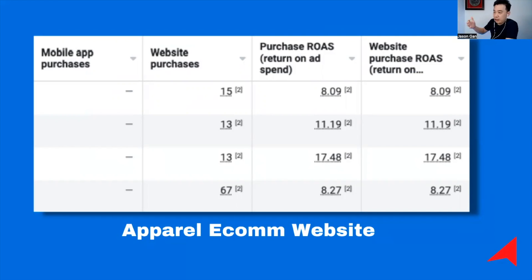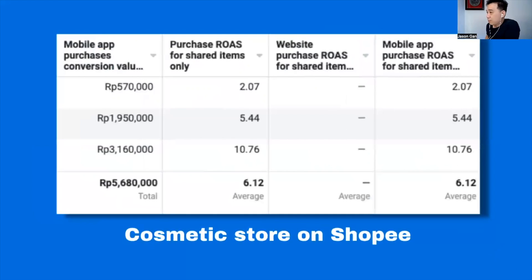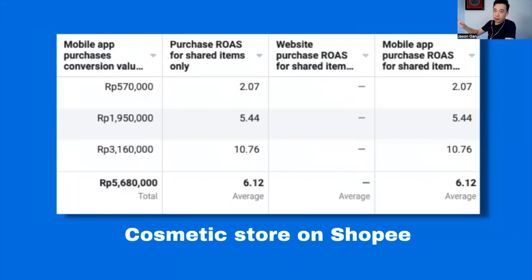This is how we helped an apparel e-commerce business achieve different results with their Facebook Ads campaign using a tailor-made strategy. Another example is a cosmetic store on Shopee selling in Indonesia — the Tier 1 campaign was at 2 ROAS and barely making money, but when Tier 2 came in as the second and third campaigns, we achieved an overall 6.12 ROAS.